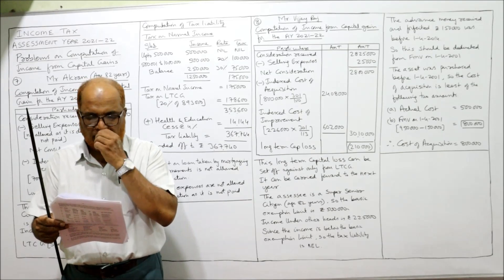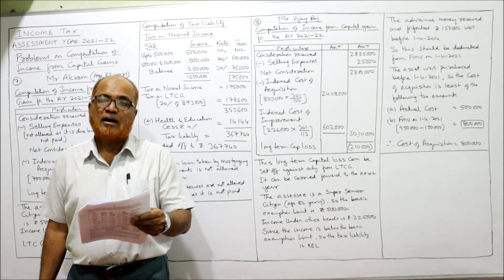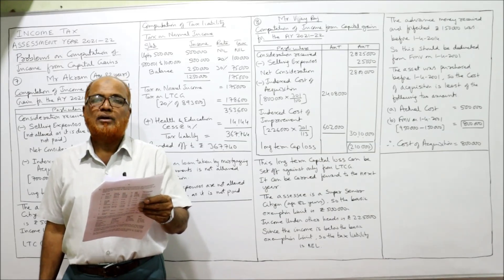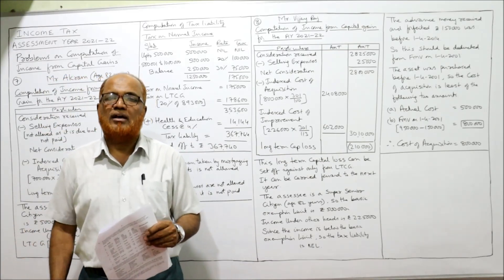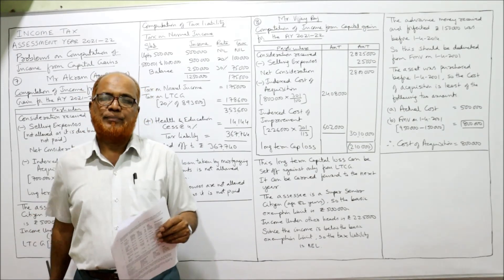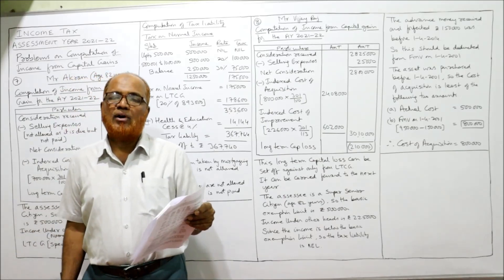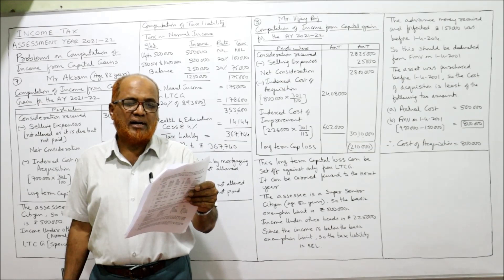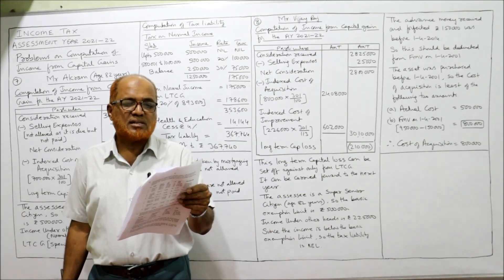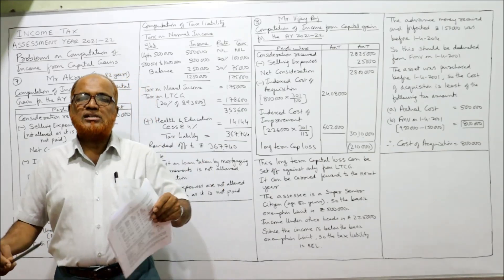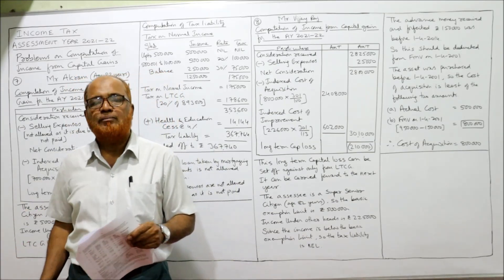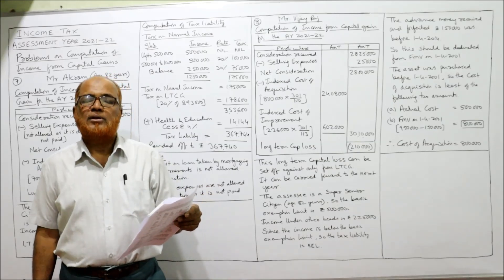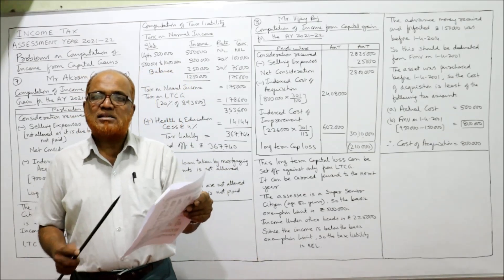Problem number 8. Mr. Vijay Raj purchased gold for rupees 5 lakh on 6th September 1989 — again purchased before 1/4/2001. The fair market value on 1/4/2001 is 9 lakh 50 thousand. Since FMV is higher than the actual cost of 5 lakh, the assessee will choose 9 lakh 50 thousand. On 16th January 2005, he ordered an ornament to be made from the gold, spending 2 lakh 26 thousand — this is the cost of improvement. The index number at the time of improvement is 113.